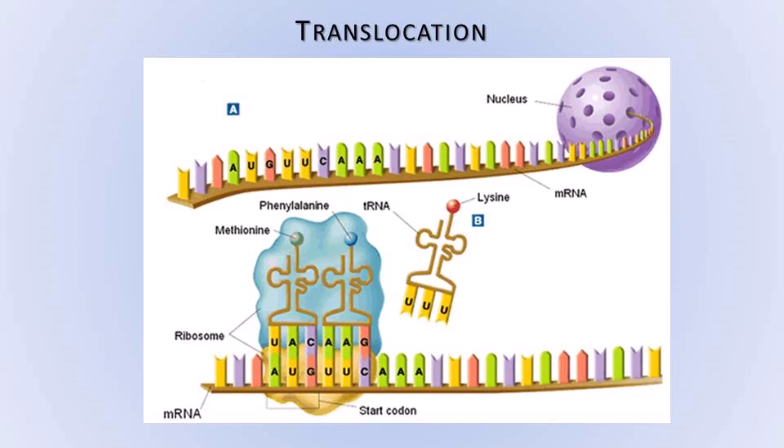Translocation: During this process, the ribosome keeps on moving from one end of the mRNA to the other end, through the distance of one triplet codon. This is called translocation. Many such genes together form complex proteins, which control various functions in the body of a living organism and their appearance too.